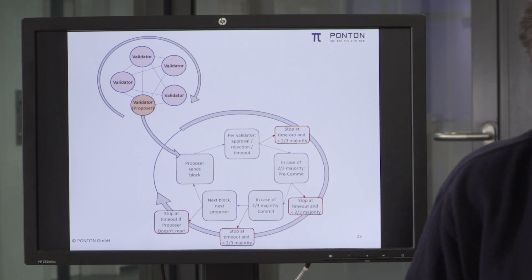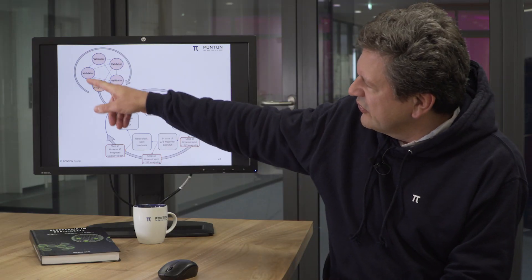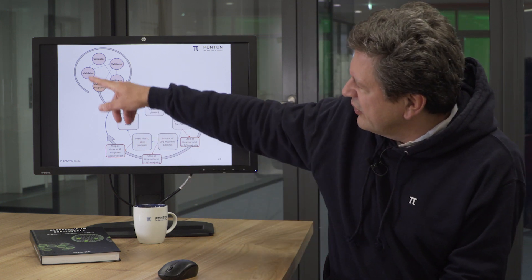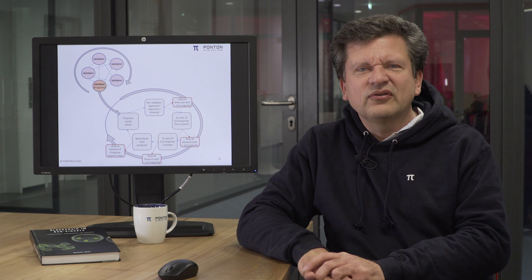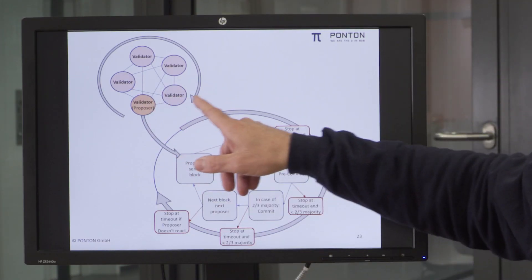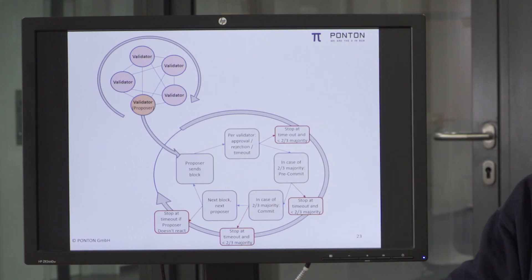In the case of Tendermint, we use validator nodes. It could be 1, it could be 20 or 50, or anything in between, and these validator nodes are involved in the consensus mechanism itself. There could also be non-validator nodes which are just further nodes who receive the result of the consensus — which is at the end a new block that is created. Let's assume we have five validators here. They are deployed on different machines, and these validators are all connected to each other — they are fully meshed. Every validator knows every other validator.